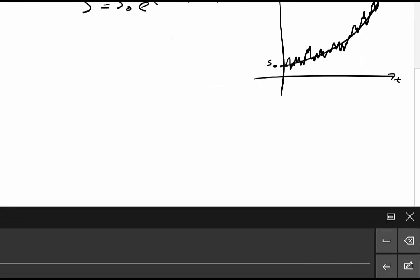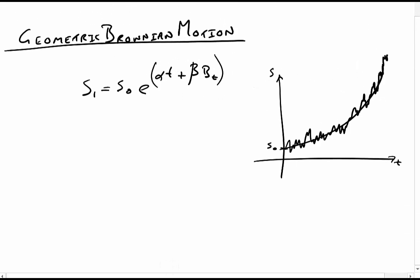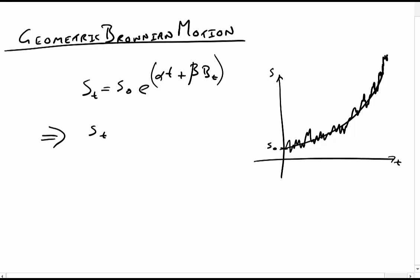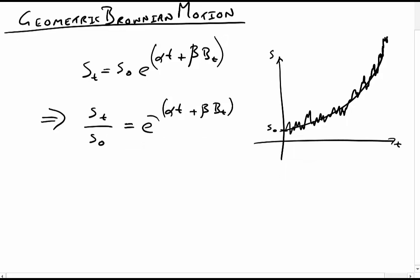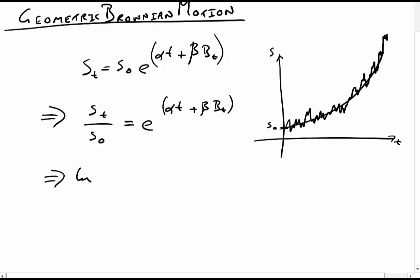This is the share price at time t, so we call it S(t). That's the share price at some particular time — it depends on t. Now let's fiddle with this. I'm going to divide by S naught, so I end up with S(t) over S naught equals e to the alpha t plus beta B(t).